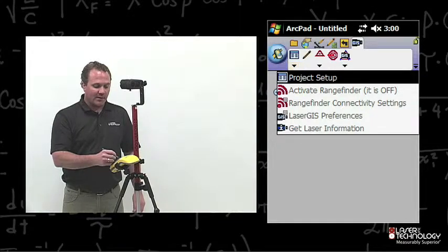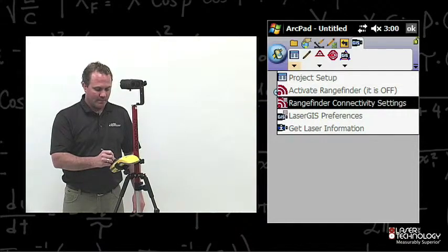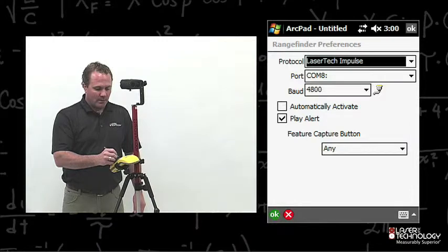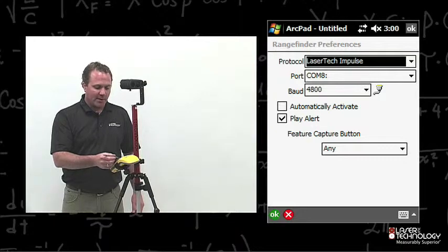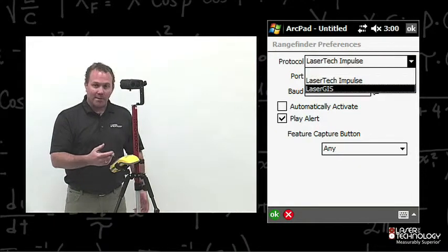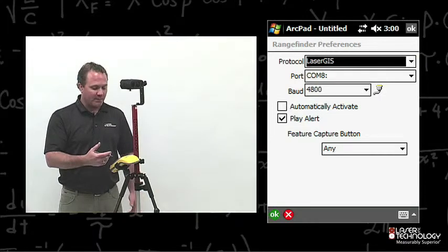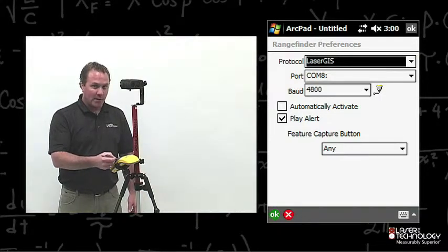And we want to go into Range Finder Connectivity Settings. Once it's in there, you're going to see the protocol of the laser tech impulse. We're going to use the drop-down and choose LaserGIS. Remember the COM port that we used earlier when we hooked up via Bluetooth and choose that right COM port.